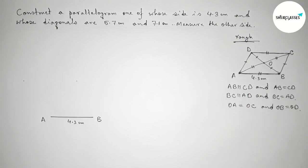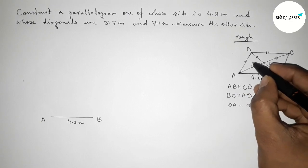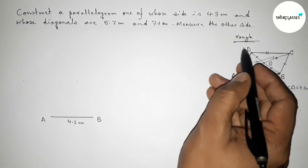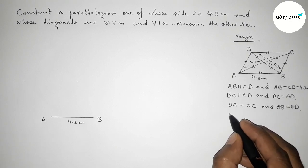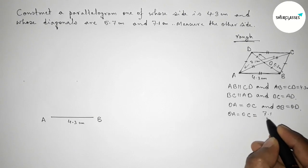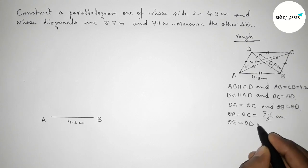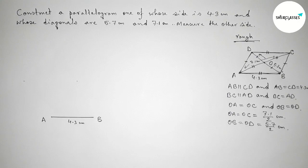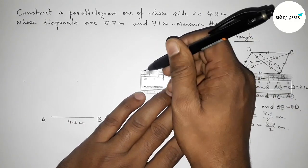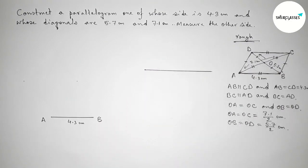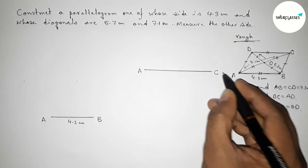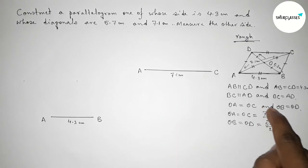Now, if we take the side as 4.3 centimeters and the diagonal as 7.1 centimeters and the other diagonal as 5.7 centimeters, then OA equals OC equals 7.1 divided by 2 centimeters, and OB equals OD equals 5.7 divided by 2 centimeters. So first we need to bisect the line 7.1 centimeters — drawing that line segment now. This is AC, the 7.1 centimeter line segment.